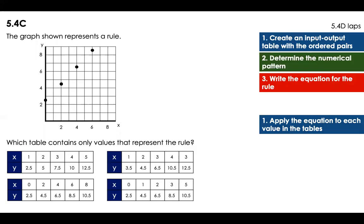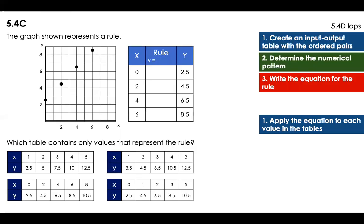So I'm going to go to my first lab from 5.4D that is going to be create an input output table with the ordered pairs. Here it is with the ordered pairs. Now I'm going to determine the numerical pattern. The numerical pattern will have to be plus 2.5. Okay? So I'm adding 2.5. This is my numerical pattern. So in the other one, they gave me the equation. Now here, I just came up with the equation. The equation is x plus 2.5.